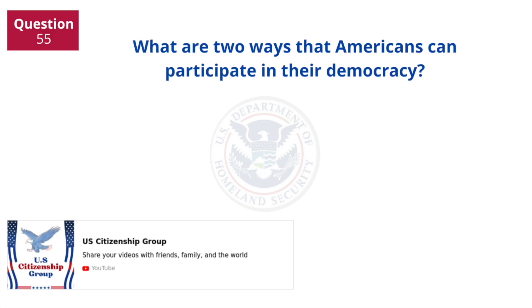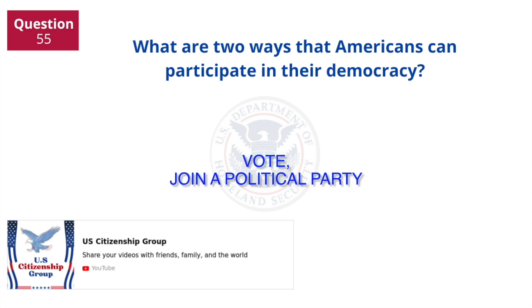What are two ways that Americans can participate in their democracy? Vote. Join a political party.